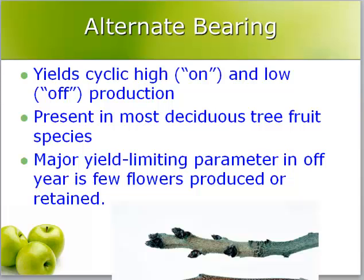Alternate bearing is present in most deciduous tree species, and the major yield-limiting parameter in off years is few flowers produced or retained, as in the case of pistachio. In pistachio, the flower buds are produced during the on years but then fall off over the season.